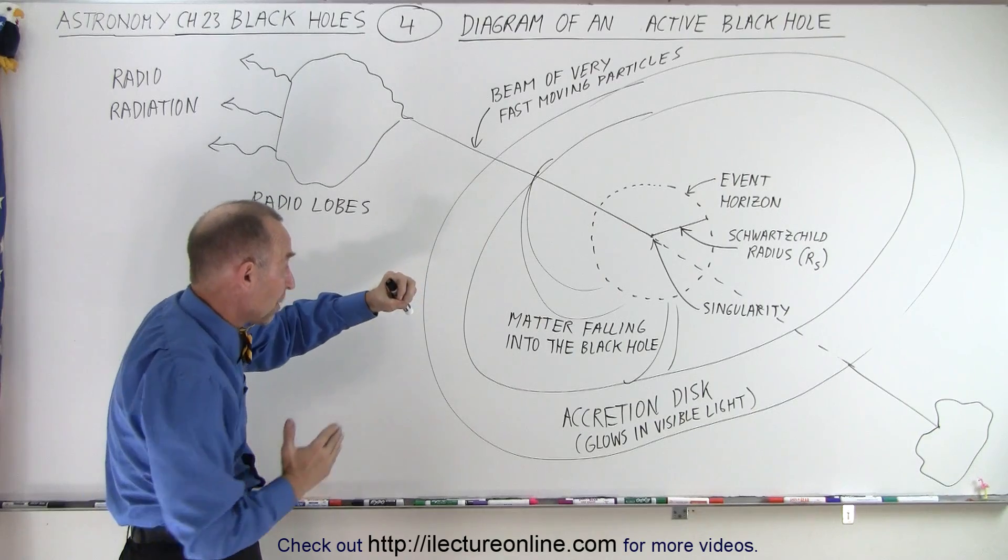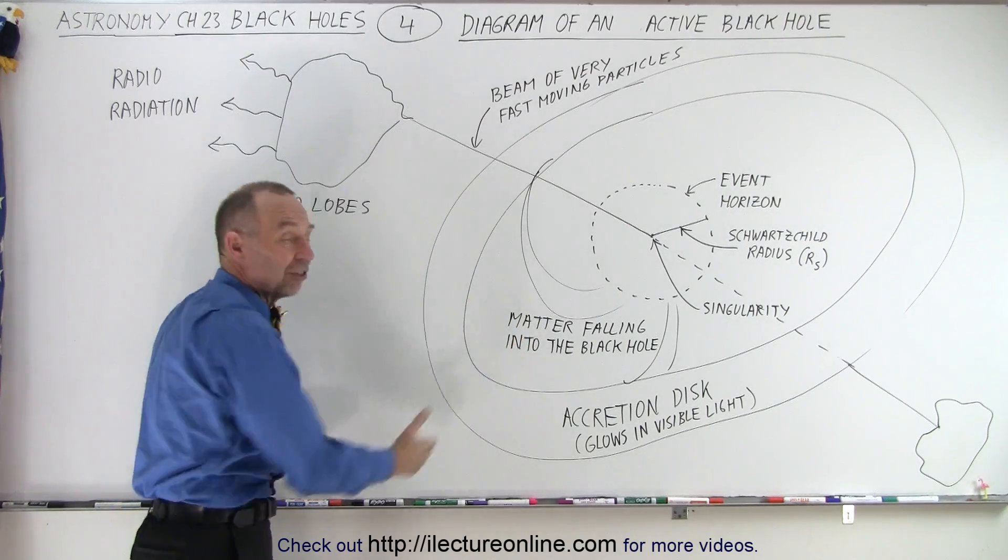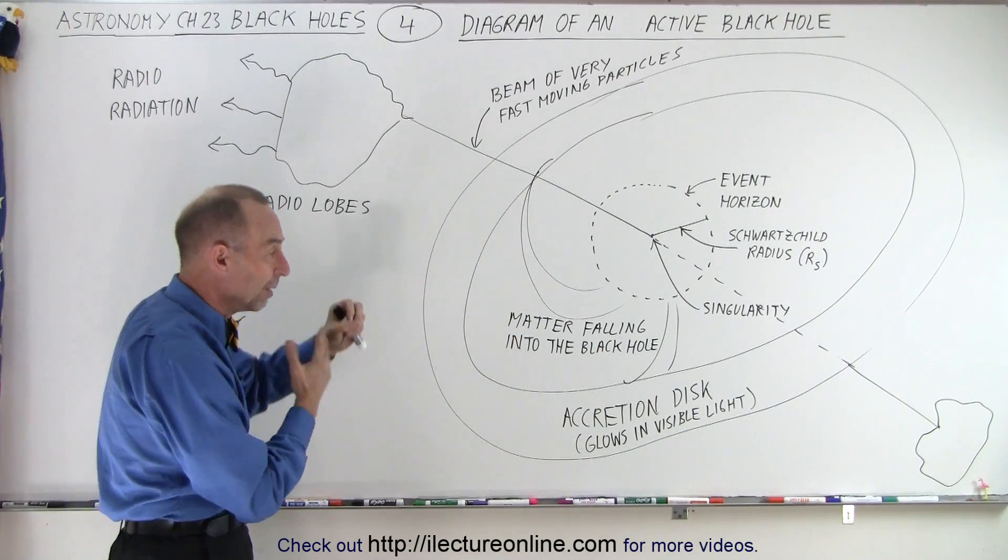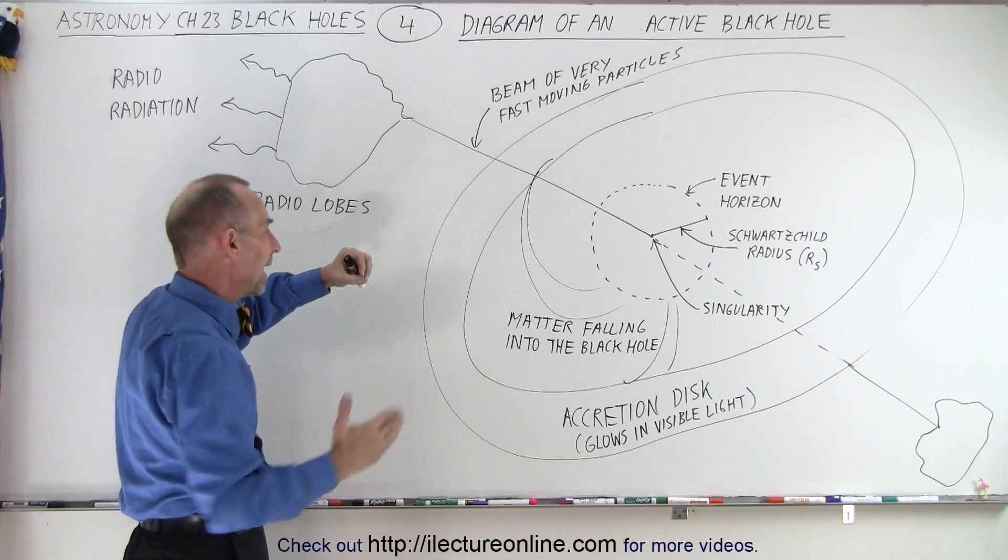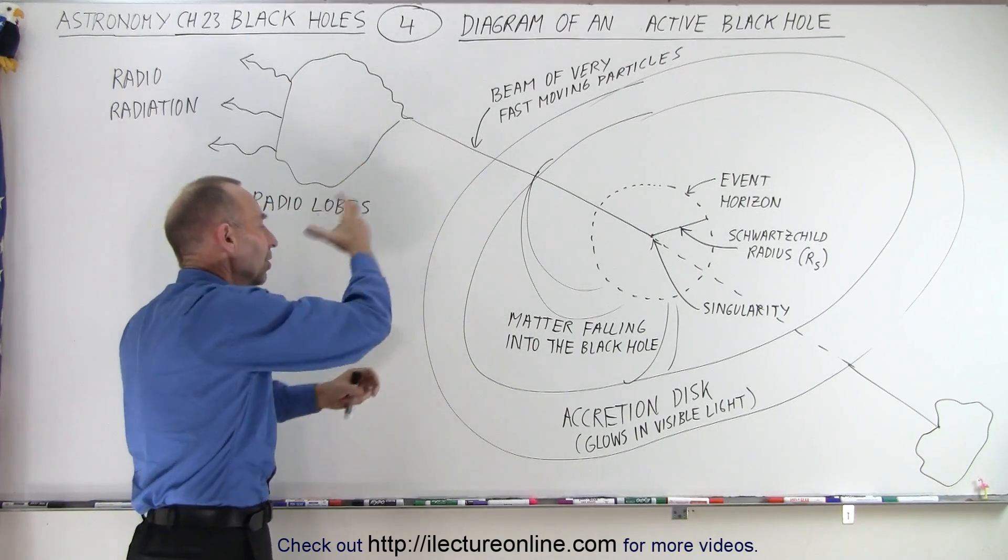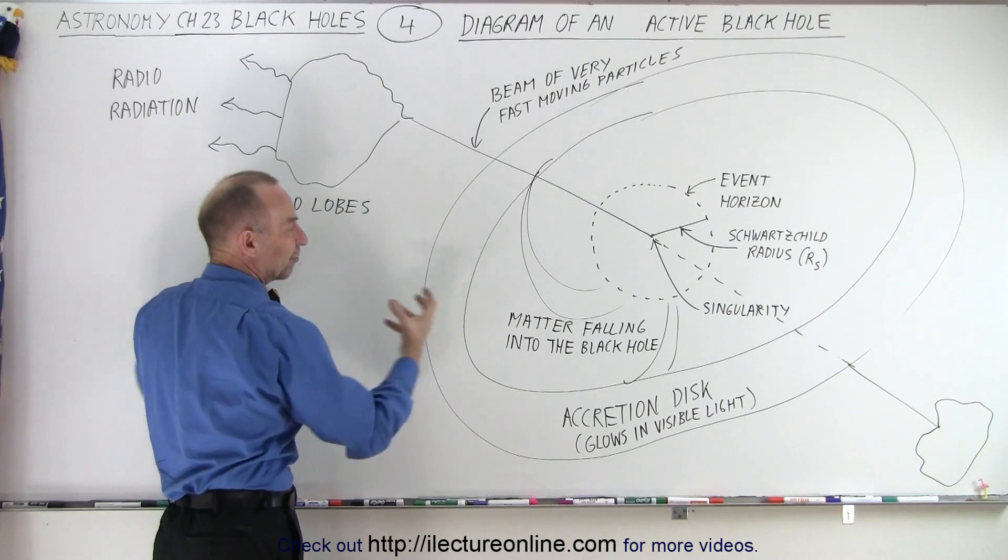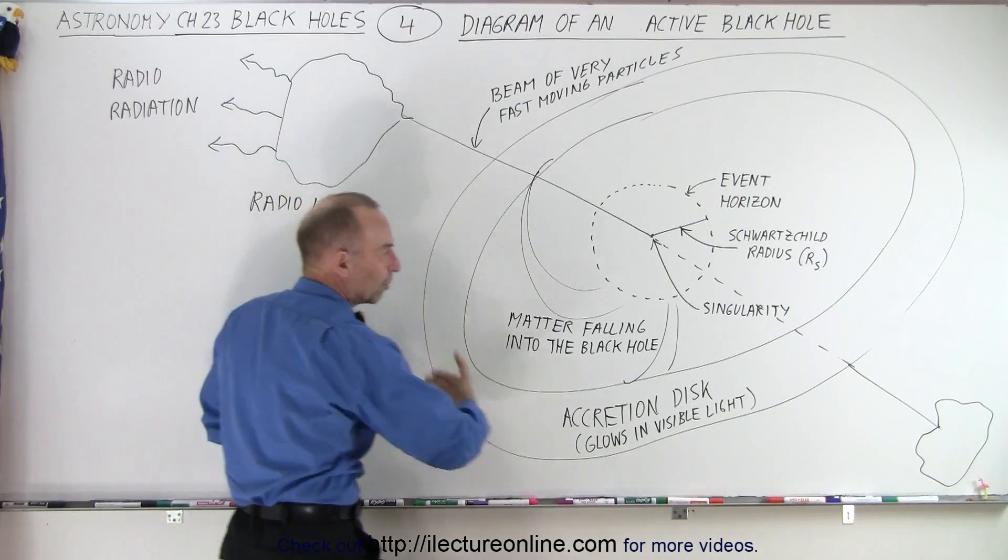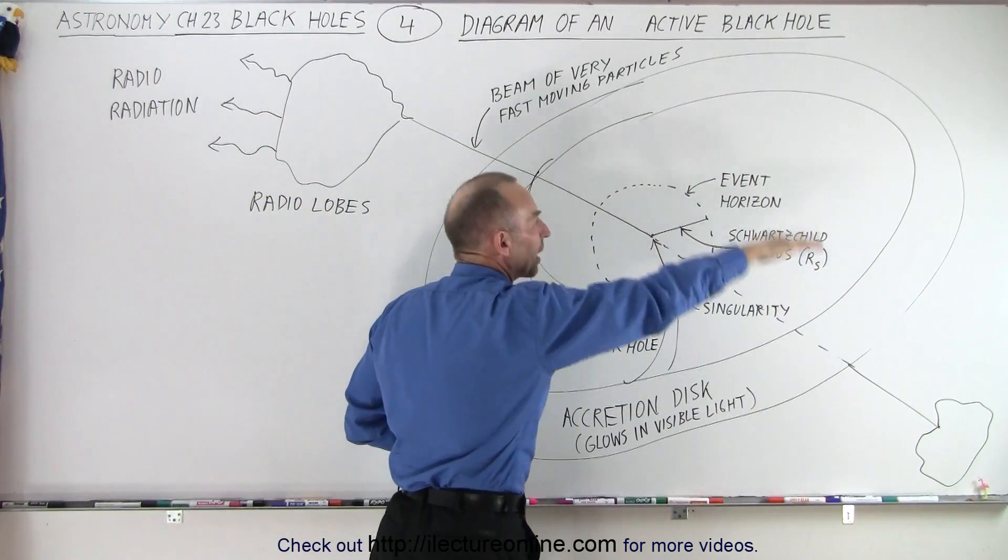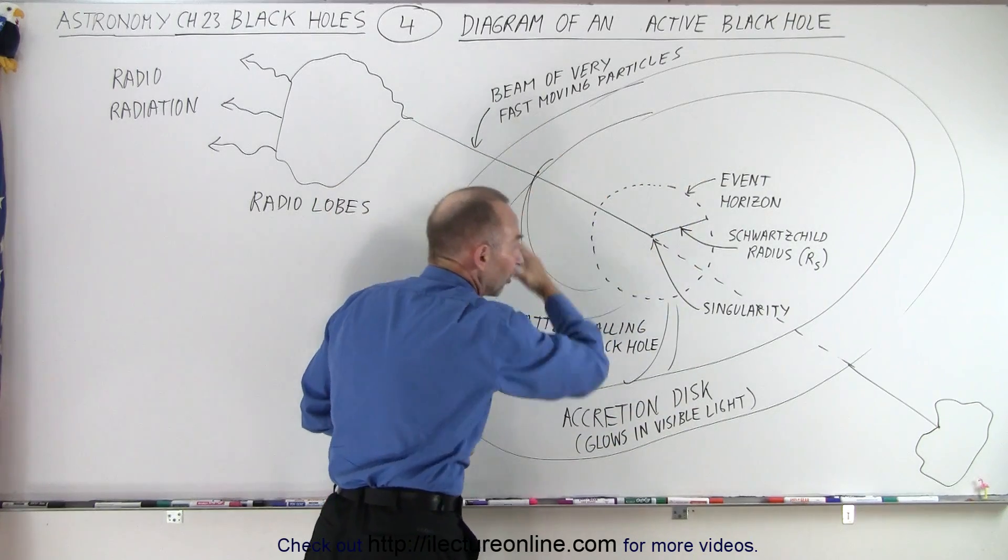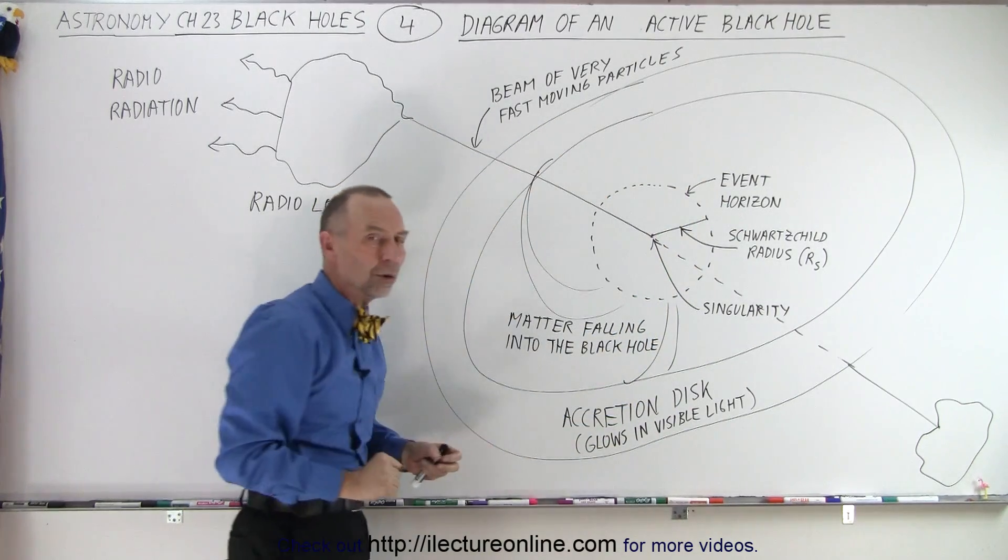If it just happens that something heads straight to the black hole, then you wouldn't have this situation. But most of the time, it will go at an angle and gets pulled in. All the material will be ripped apart and all the debris will start swirling around the black hole. The whirlpool will get closer and closer and eventually get pulled into the black hole.